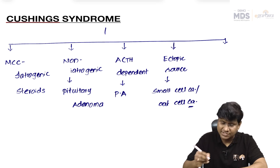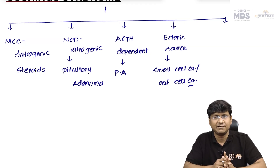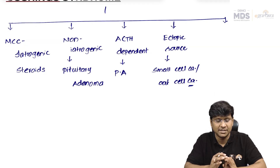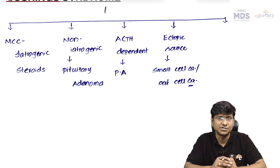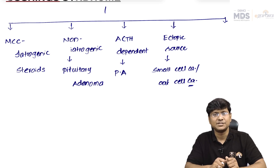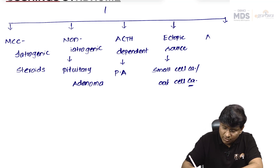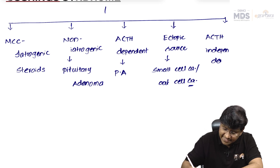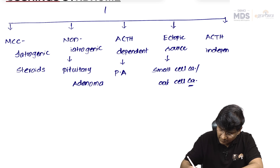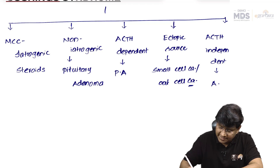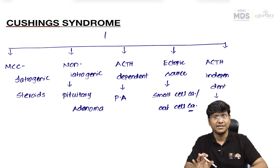There are many ectopic sources for Cushing's: small cell carcinoma of the lung, followed by pancreatic and bronchial carcinoid, then pheochromocytoma. Out of these, the most common is small cell (oat cell) carcinoma of the lung. For the ACTH-independent type of Cushing's, the most common cause is adrenal adenoma.